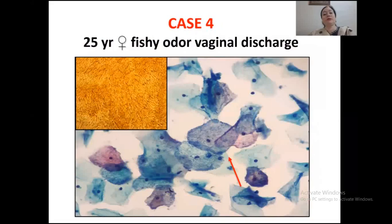Case four is a 25-year-old female with fishy odor vaginal discharge. The inset picture is again a clue to the diagnosis.